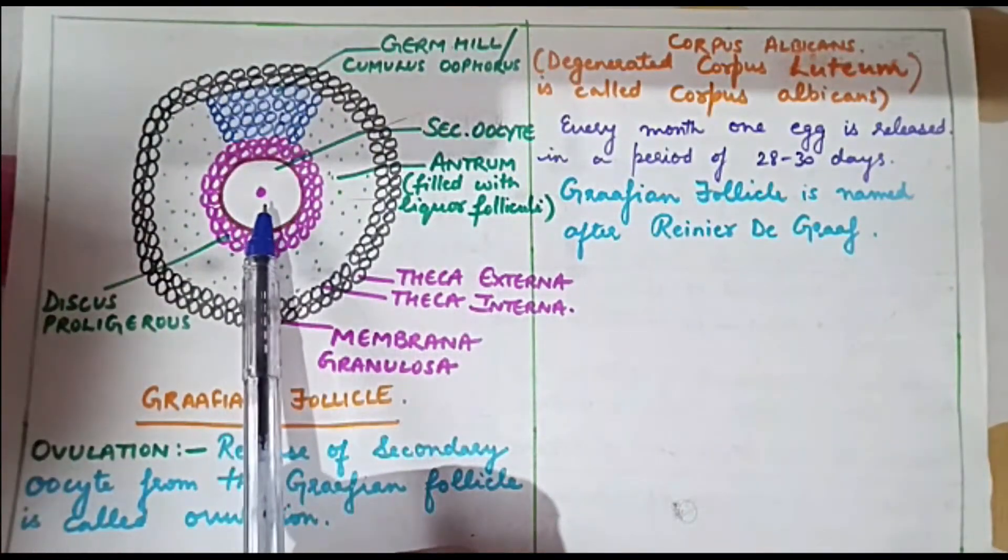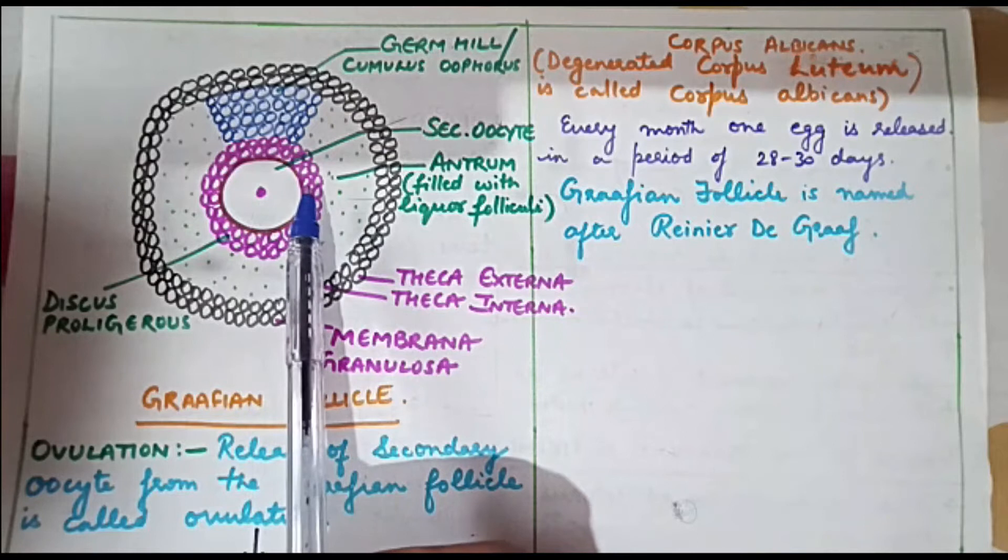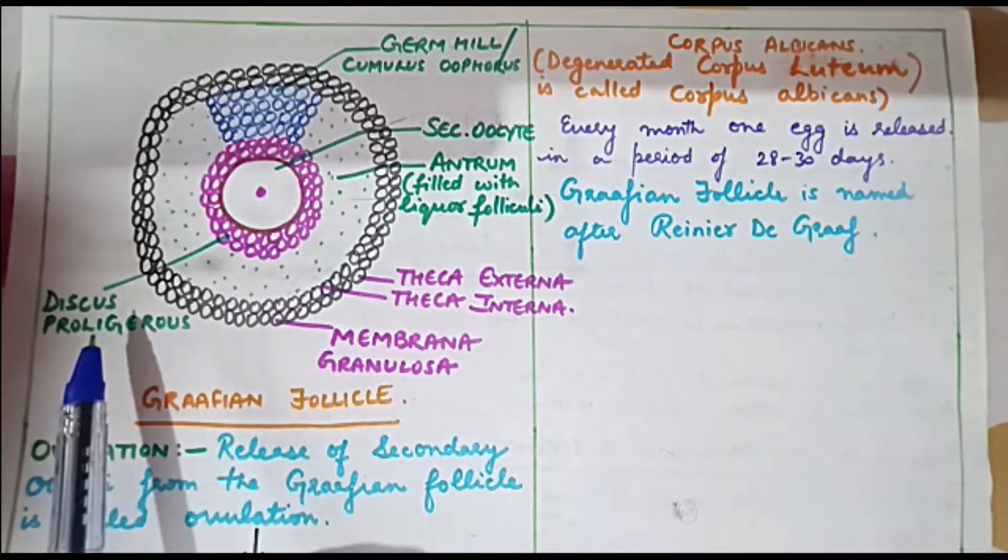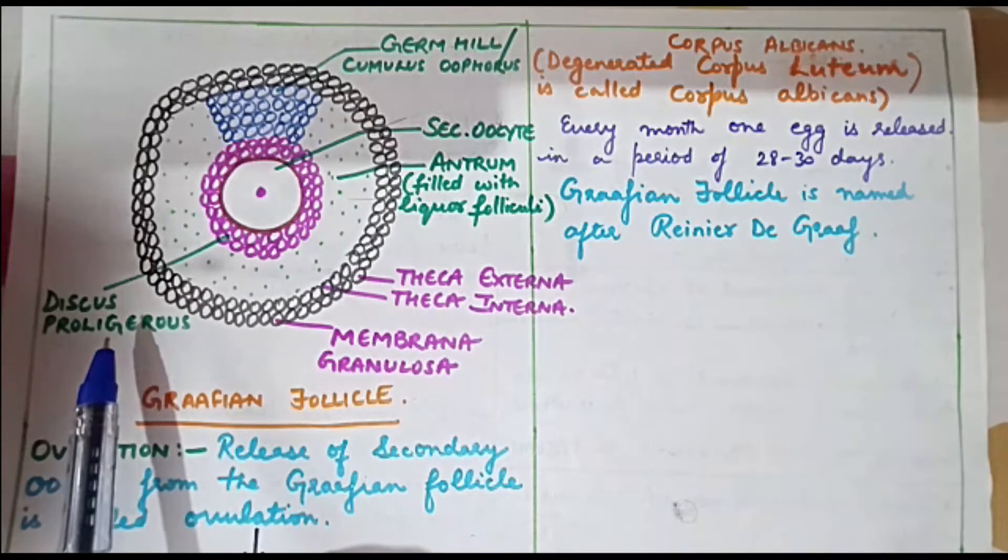The egg or ovum which is in its secondary oocyte stage is surrounded by a layer of cells which are called the discus proligerus. The layer of cells is known by the name of discus proligerus.